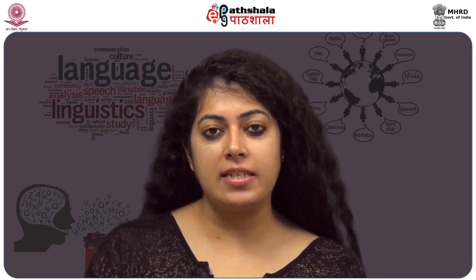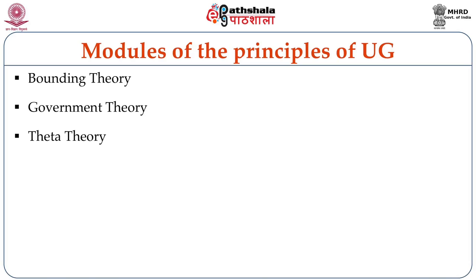In our previous module we saw that the modules of universal grammar as stated by Chomsky were six in number, out of which we dealt with two in the previous lesson. Today we will be dealing with the next four of those modules: namely theta theory, binding theory, case theory, and control theory. So let's begin with theta theory.